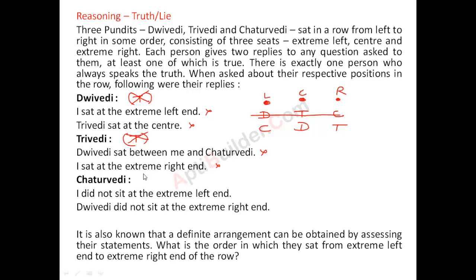Now we will assume C is making those two truth statements. C says: I did not sit at the extreme left end — so C is not here at the extreme left. And D did not sit at the extreme right end — so D is not at the extreme right. Now checking the other statements: D sitting at the extreme left end may be true or false, and T sitting at the center — so one must be true and one must be false. This is still possible.